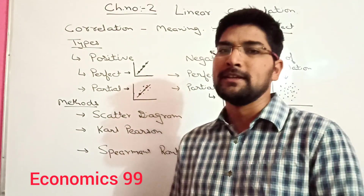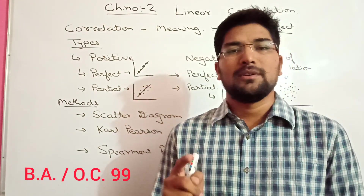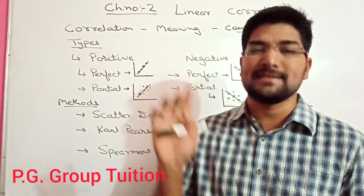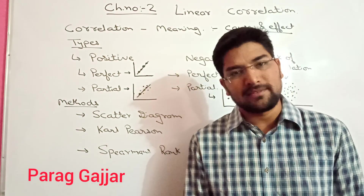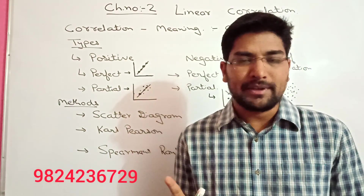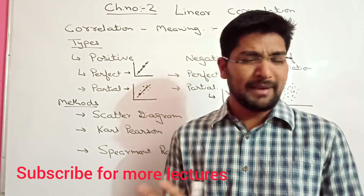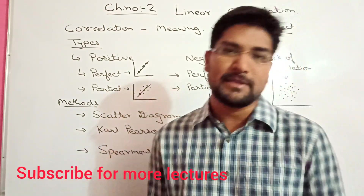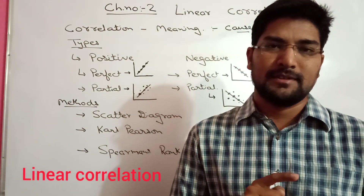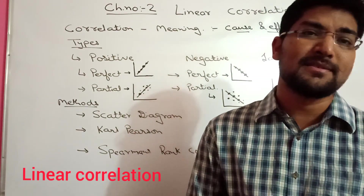To understand positive correlation — we have two variables X and Y. If X is increasing and Y is also increasing, or if X is decreasing and Y is also decreasing — that is, both are moving in the same direction — then that is known as positive correlation. For negative correlation, if X increases then Y decreases, and if X decreases then Y increases — they move in opposite directions. That is said to be negative correlation.